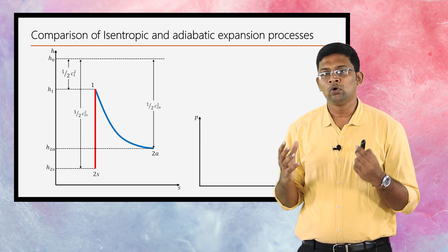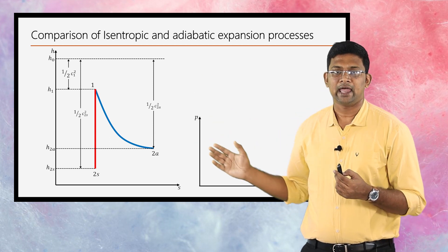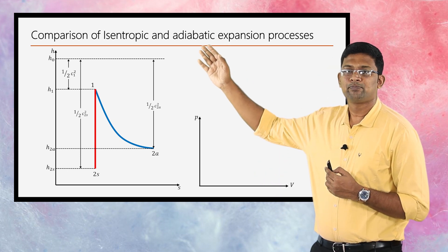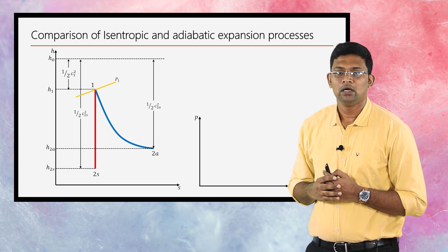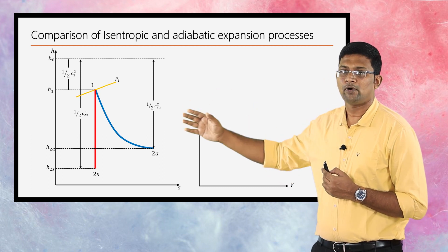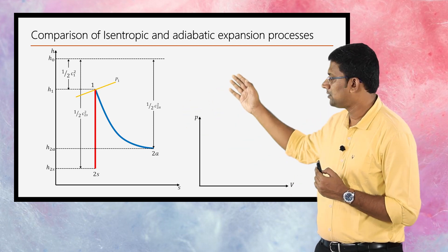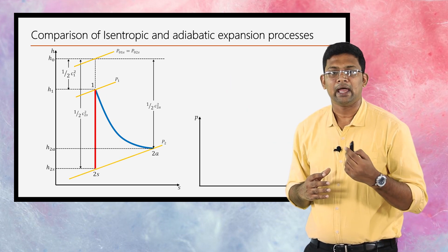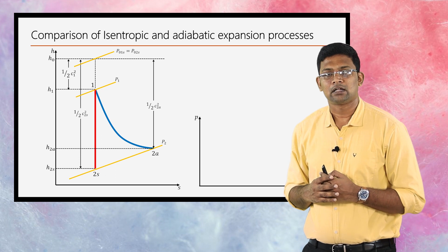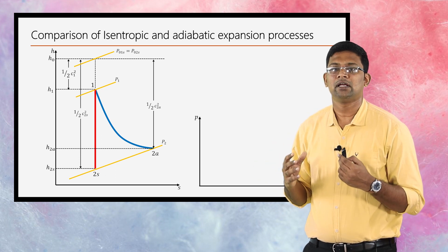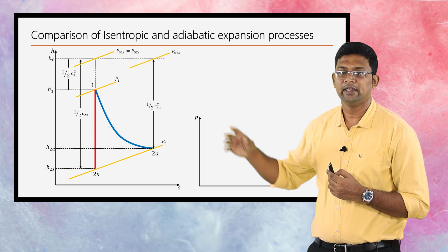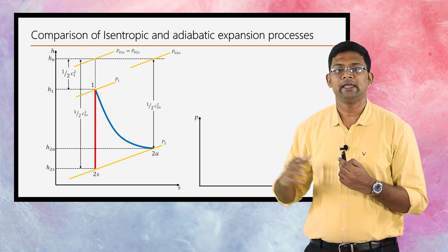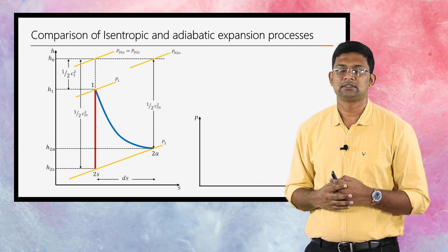In a Mollier diagram (h-s diagram), we can draw the constant pressure lines. The pressure at state point 1 is p₁, and the pressure at the end points of the two processes is p₂. Then p₀₁ and p₀₂s represent the stagnation pressures at the corresponding points, and we can also mark h₀₂a. This is about the h-s diagram.